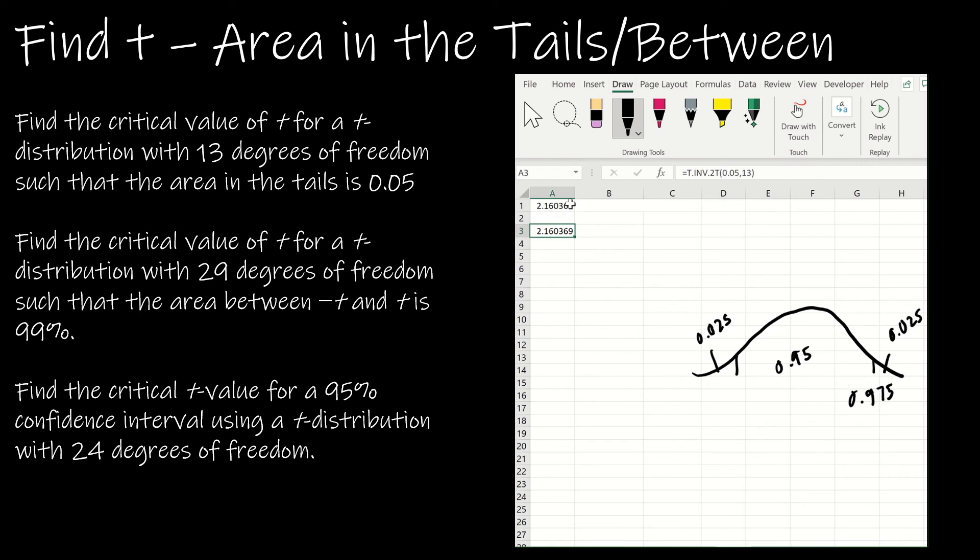The next one: the critical value of t for a t-distribution with 29 degrees of freedom, such that the area between negative t and positive t is 99%. If this part in the middle is 99%, there's 1% total in the tails. So this is half a percent and this is half a percent.